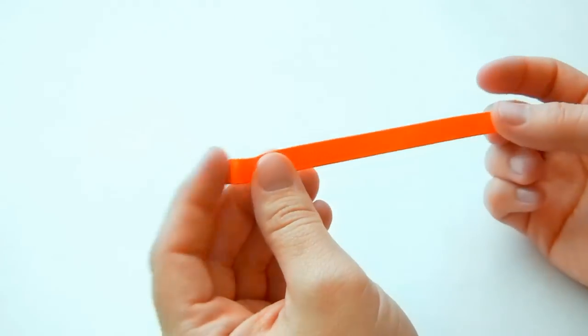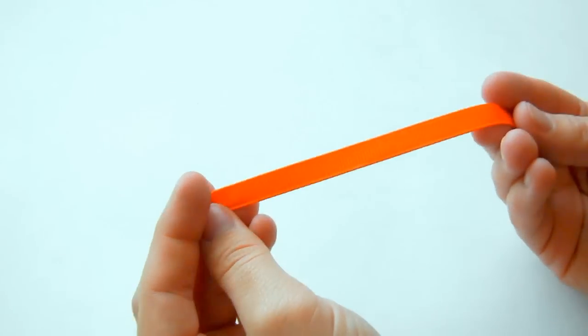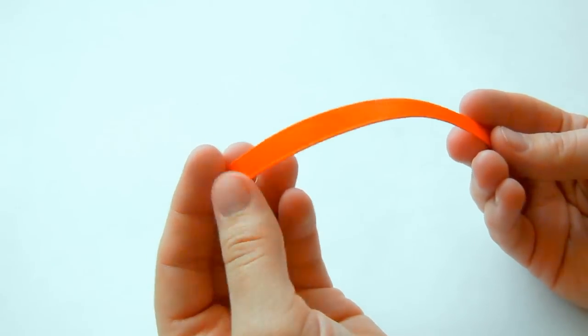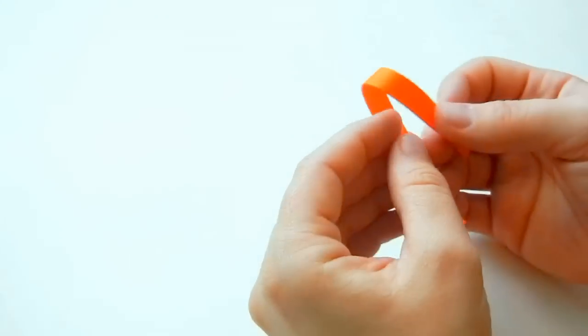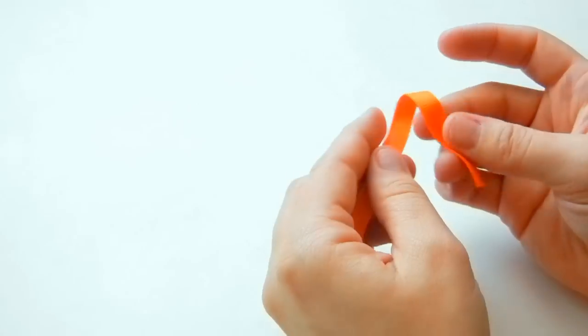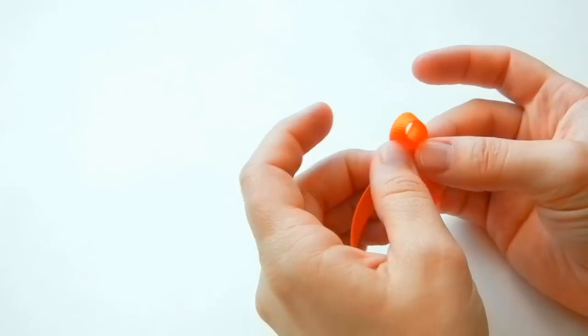Now we're going to make our bow. I've got 3 1⁄8 of an inch orange grosgrain ribbon. And it's probably better to use 1⁄4 of an inch, but it will still look cute either way. The way we're going to make our bow is we're going to take one end and make the first part first.